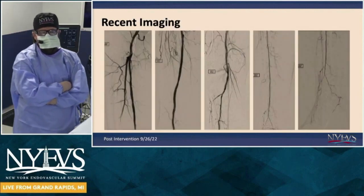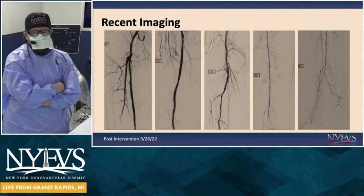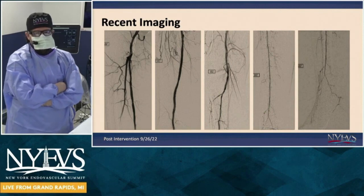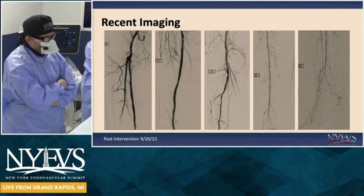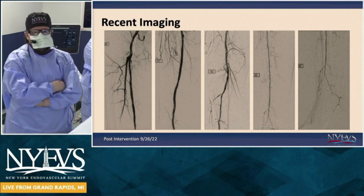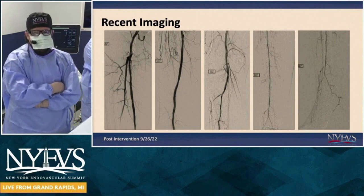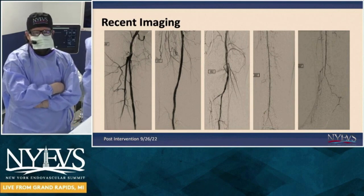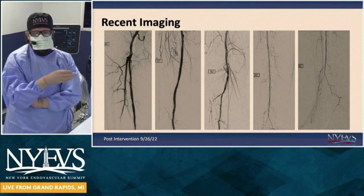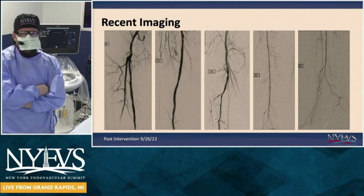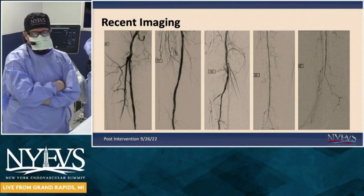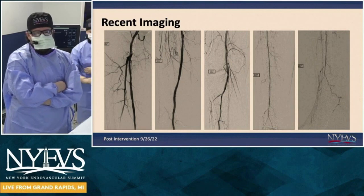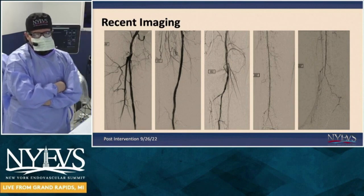I want to show you the images of the last intervention — the post-intervention images. We don't have a picture of the wound, but I'll show you once we go live where the wound distribution is. You can see the SFA, popliteal, TPT peroneal, and to the right, the final image obtained through a sheath of the pedal loop and the plantar circulation.